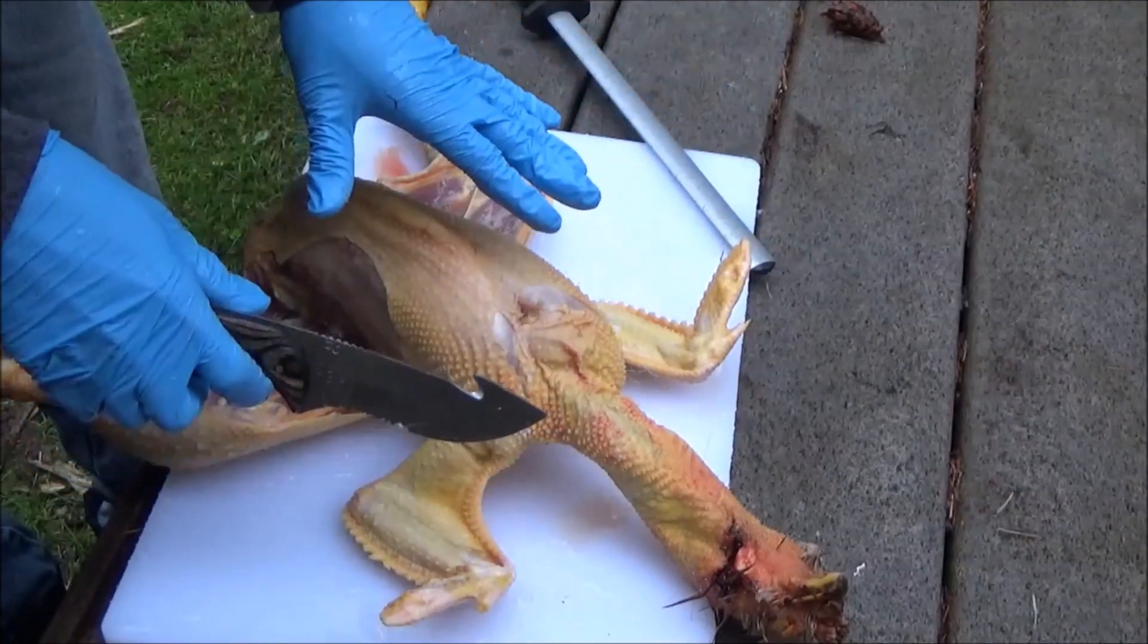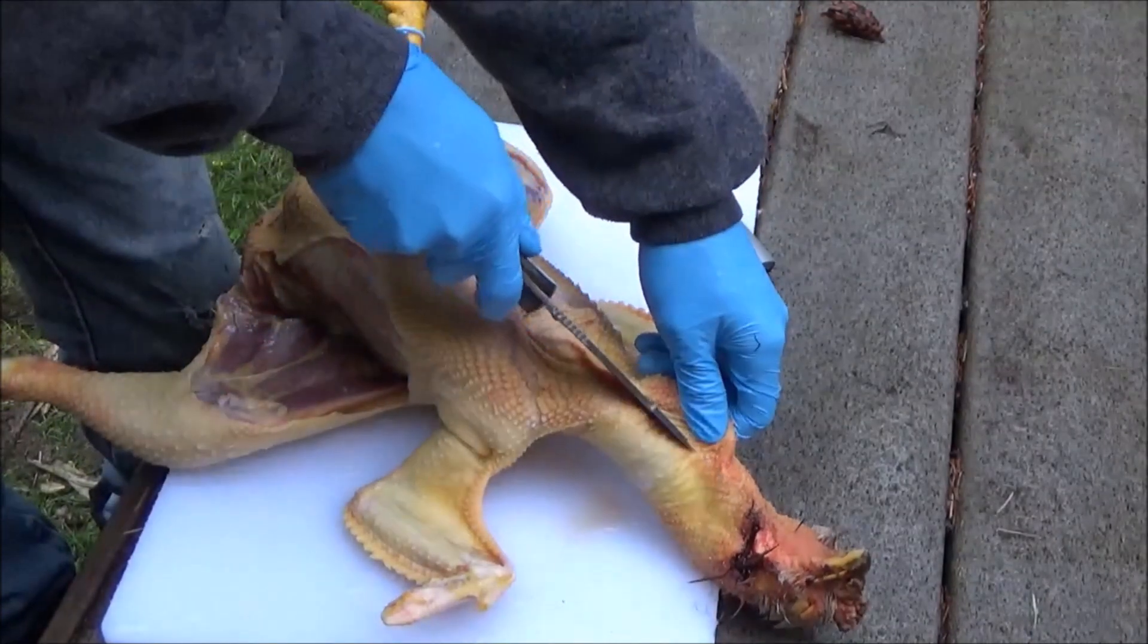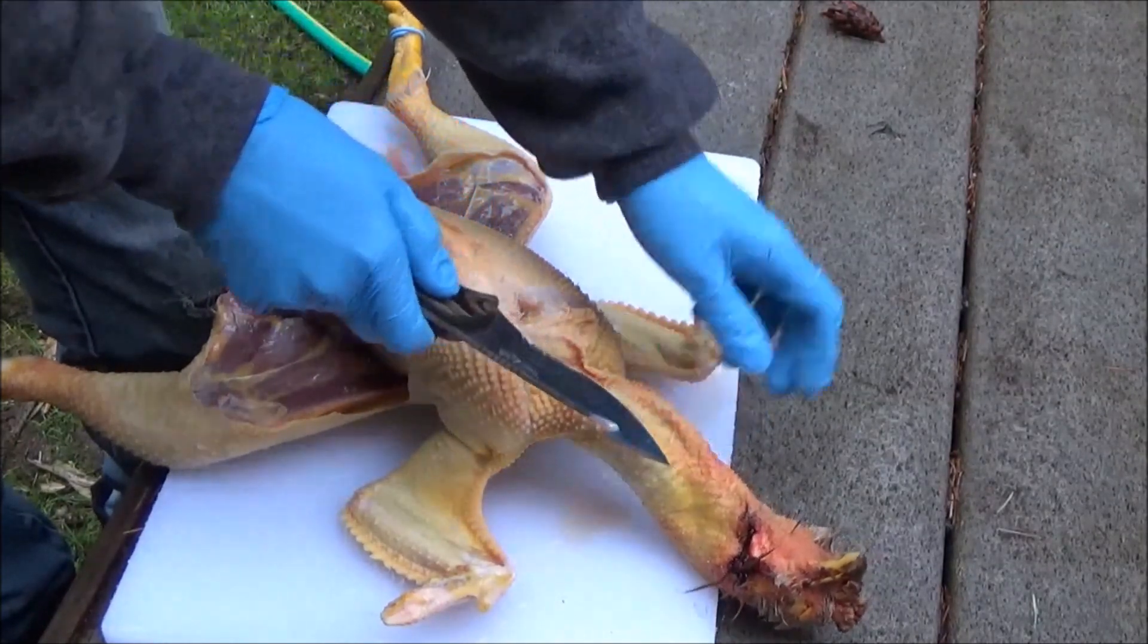We're out here prepping some chicken today and this is a good opportunity to show you when to use this diamond steel. As you can see, this knife has gone so dull. Look at this, it barely slices through this chicken skin.